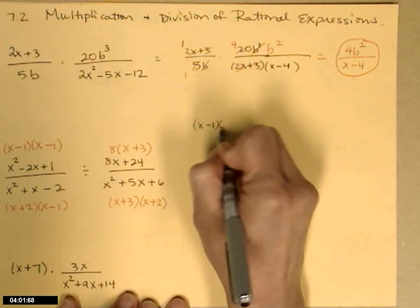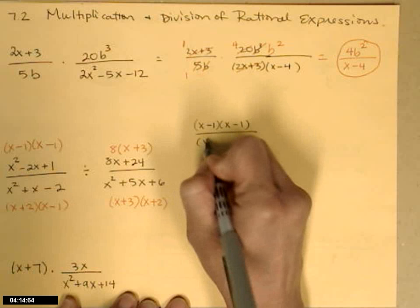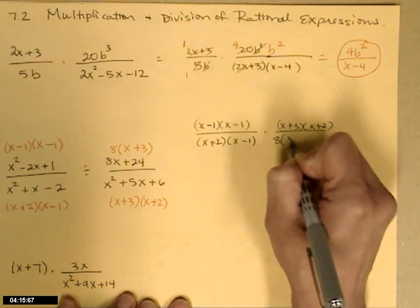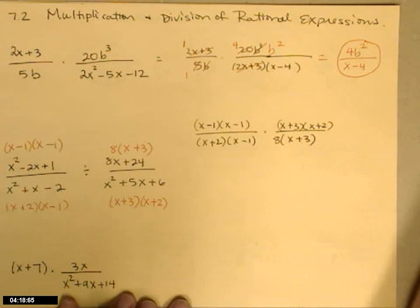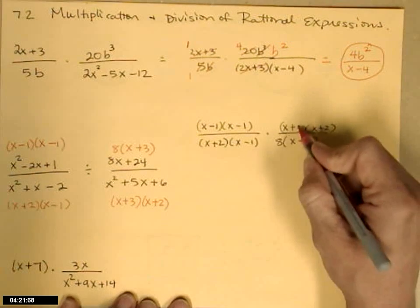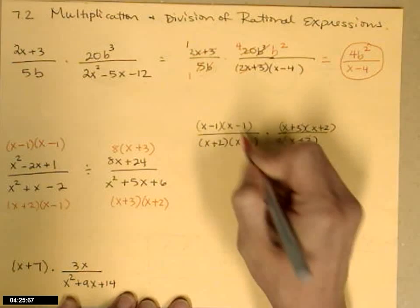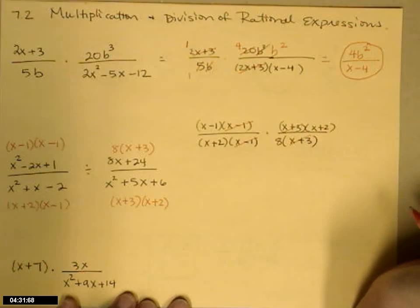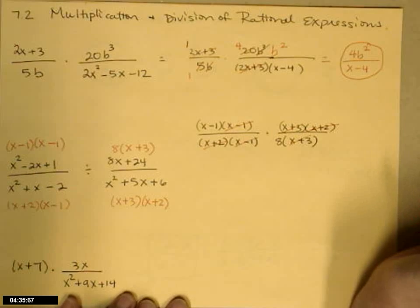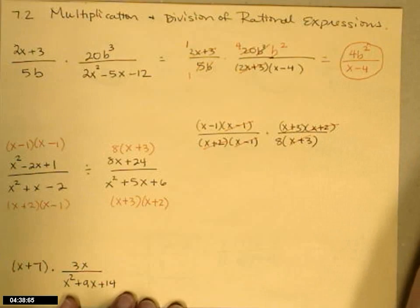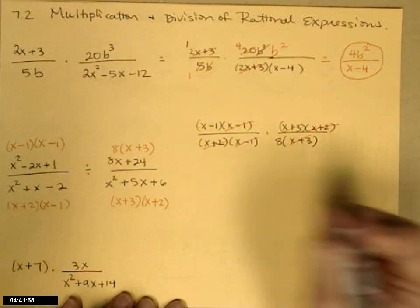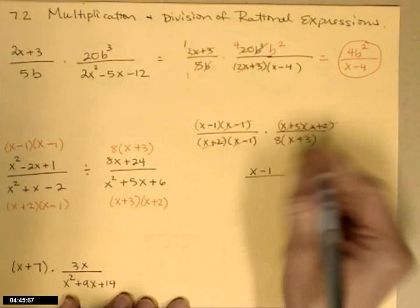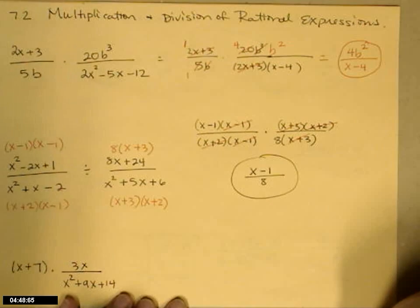So I get x minus 1 times x minus 1 divided by 8 times x plus 3. I have an x minus 1 in the top and an x minus 1 in the bottom — cancel those, but I can't take care of both of them, so one has to stay. Then x plus 2 cancels the x plus 2 across — as long as one's on the bottom and one's on the top, you can cancel them. What's left is x minus 1 on the top and 8 on the bottom. And that's it.